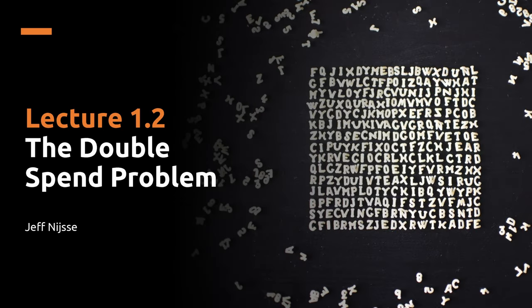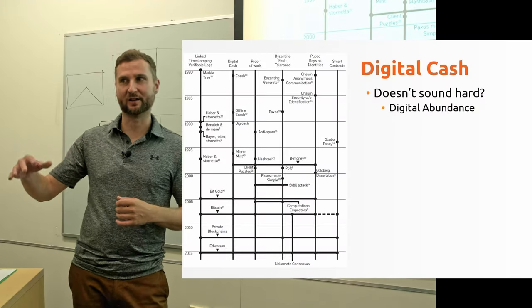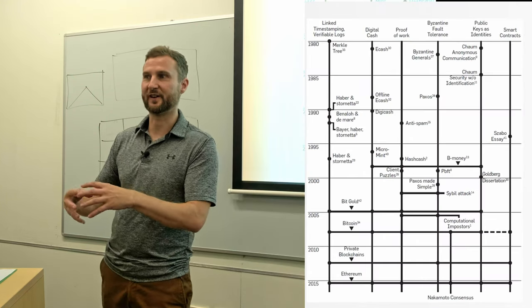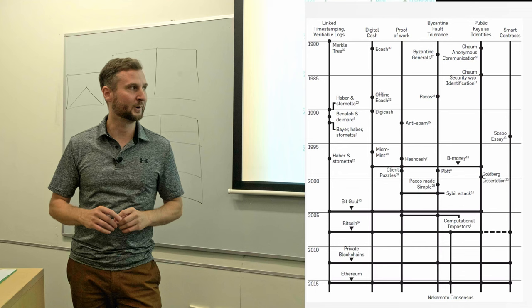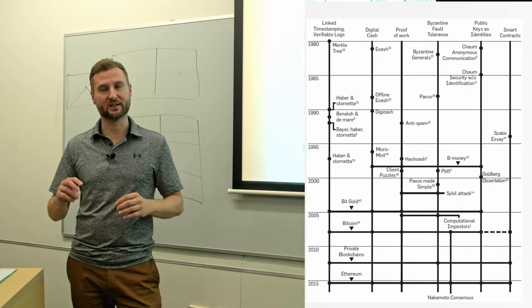In this section, we'll be introducing the double spend problem and then moving on to how does Bitcoin solve it. So that's just a little bit of background as to the traditional financial system. We still live in this world, still runs most of the modern world, but maybe that's starting to change with the idea of digital cash.